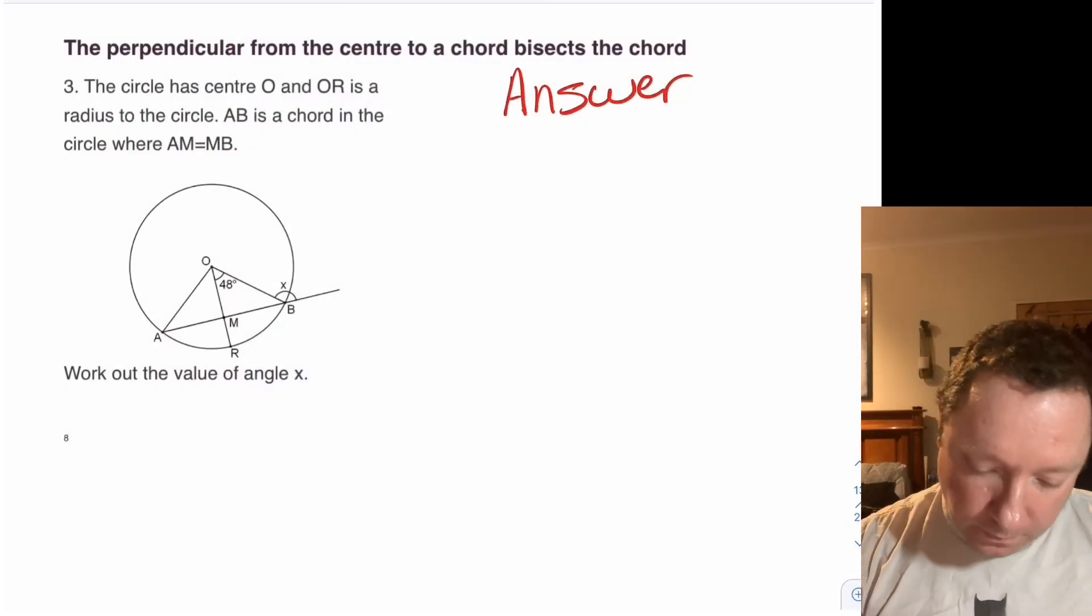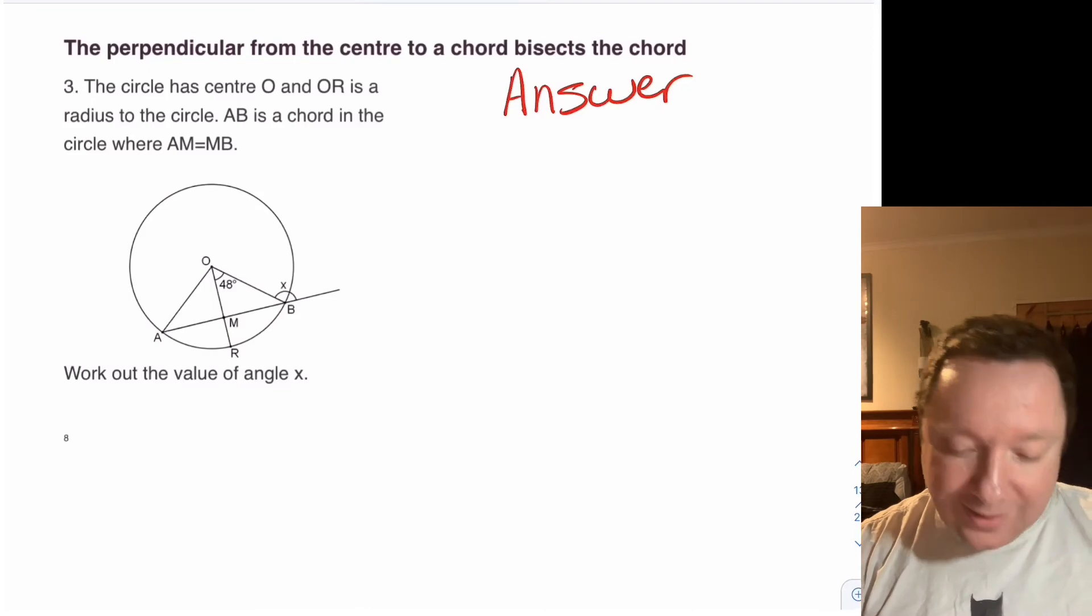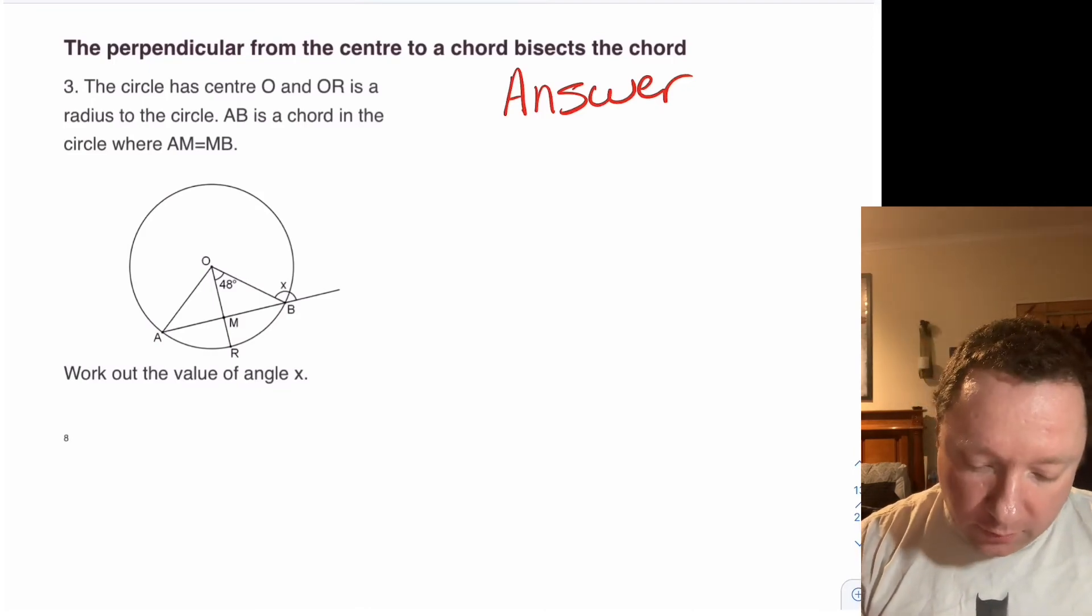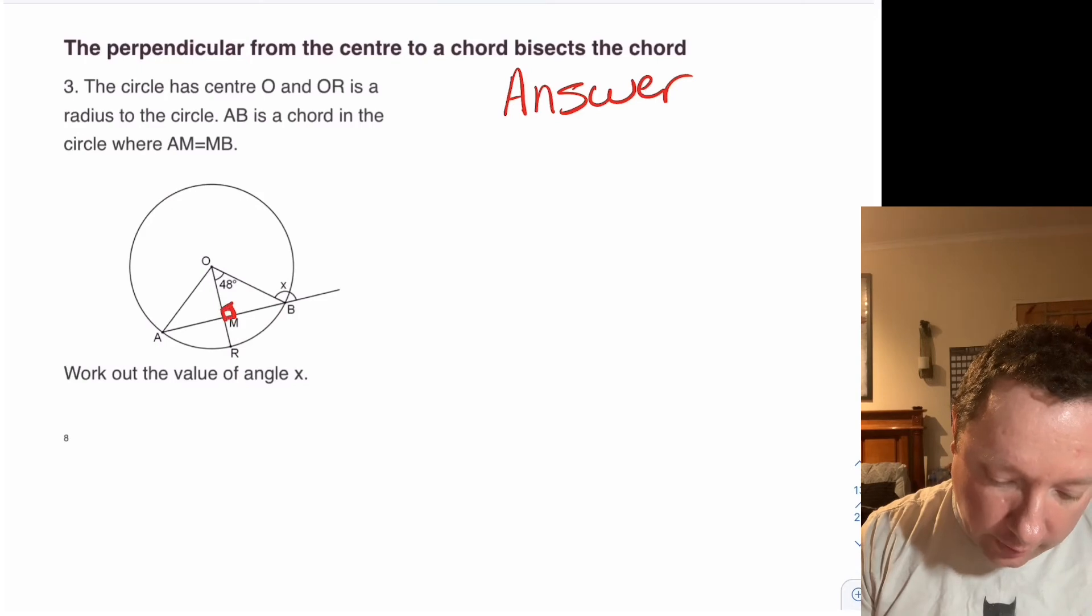And the answer. So it's just about identifying all the things. It tells us that this is a chord, that these are the same length, and that this is a radius. So it cuts it at right angles. So we can just mark on our right angle here.